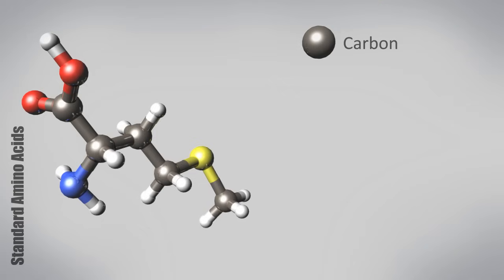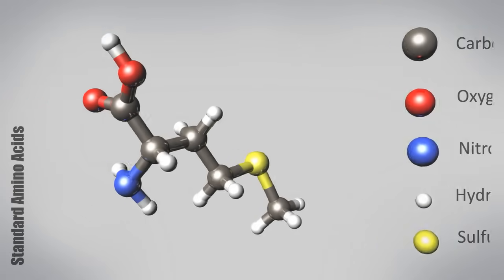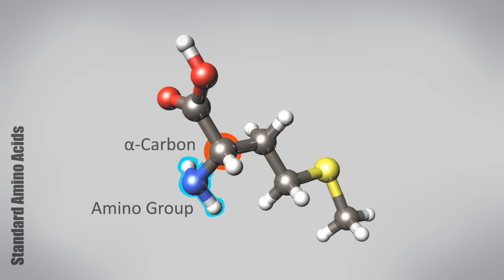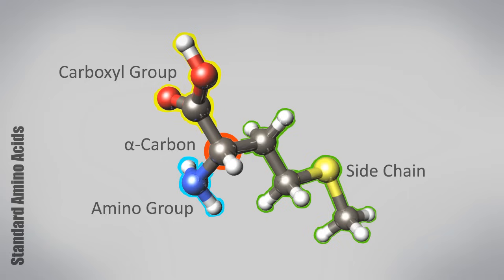Amino acids are made of carbon, oxygen, nitrogen, hydrogen, and sulfur atoms. These atoms form an amino group, a carboxyl group, and a side chain attached to a central carbon atom. The side chain is the only part that varies from amino acid to amino acid and determines its property.